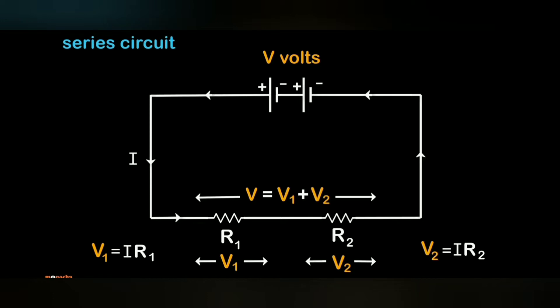At R1 we are having the voltage V1 and at R2 we are having the voltage V2. According to Ohm's law, V1 is equal to I1 R1. Here the current remains constant at both the resistors, but voltage is splitting up.